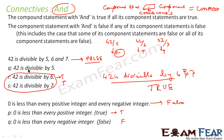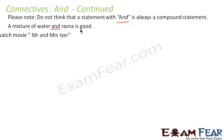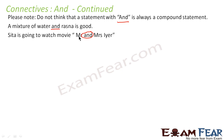But please don't think that AND is always used as a connective. I'll give examples where AND is used but there is no compound statement. When I say 'a mixture of water and rasna is good,' here AND is not a connective — this is one complete statement. Another example: 'Sita went to watch movie Mr. and Mrs. Iyer.' Here also AND is used, but it is not a connective. So please be aware, you may find scenarios where AND is not used as a connective. In summary: if AND is used to combine component statements into a compound statement, even if one component statement is false, the compound statement is false. And AND is not always a connective.